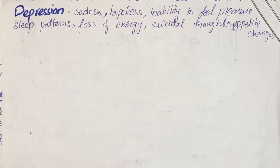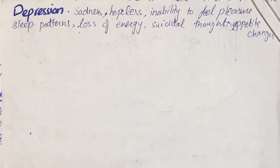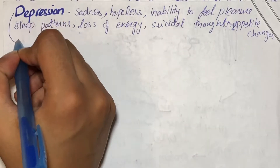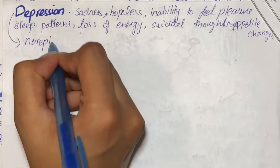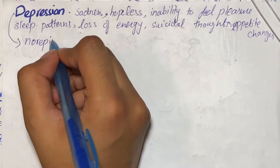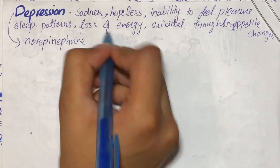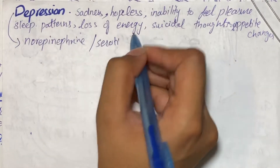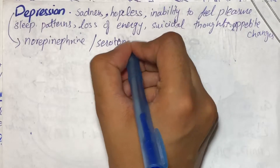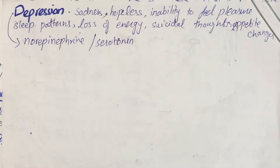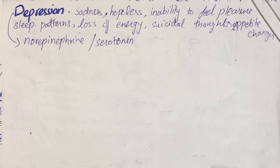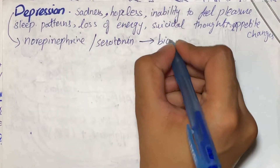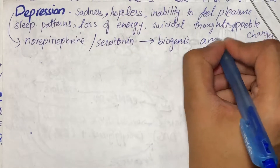If we talk about the pathophysiology of depression, what actually happens is that there is a decrease in the concentration or production of norepinephrine or serotonin in brain, which actually results into depression. This leads to a theory which is called the biogenic amine theory.